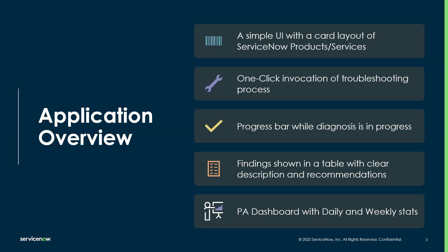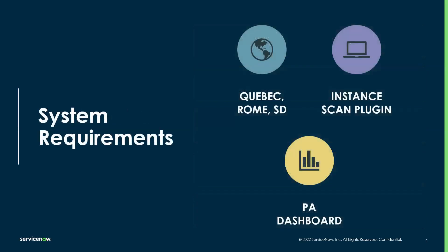Each finding is a potential issue that could manifest and cause problems within your instance. It comes with a clear description, a link to documentation, and what to do to fix it — which property to change or what action to take. We also have a PA dashboard that shows metrics about your usage so you can track how you're doing with respect to findings. The app is available for releases going back to Chrome and San Diego, is built on the instance scan plugin available out of the box, and uses default performance analytics — no special licensing required. It's a free app on the store.